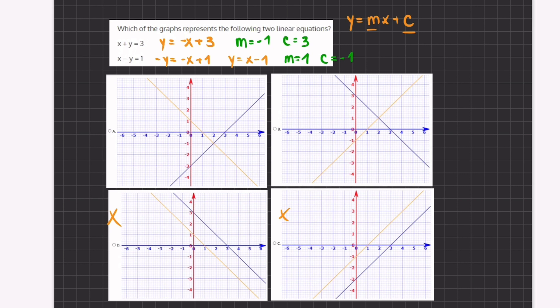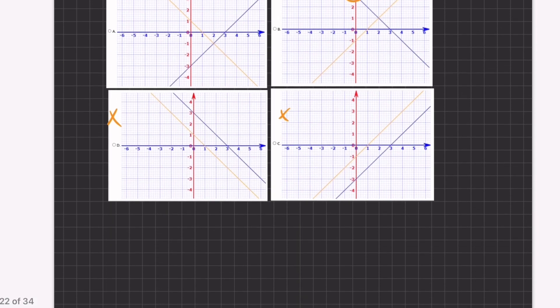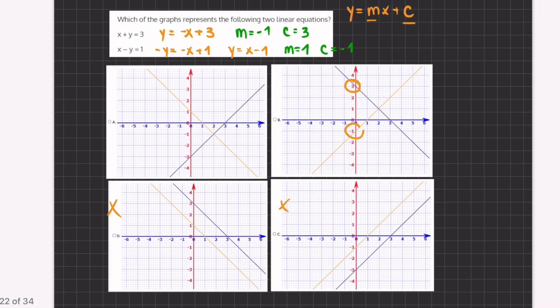Let's take a look at our y-intercepts. We have to have a y-intercept at 3 and at negative 1, and if we take a look at graph b, we have an intercept at 3 and at negative 1.